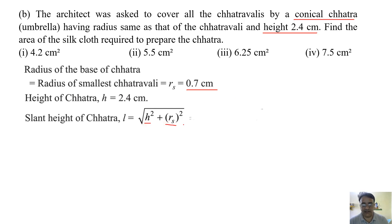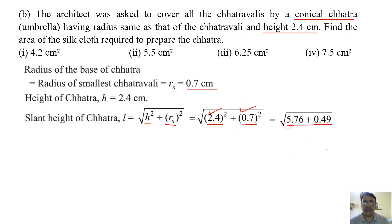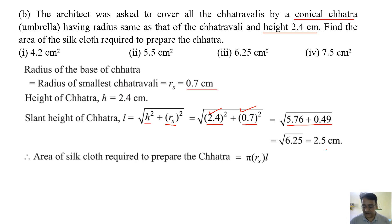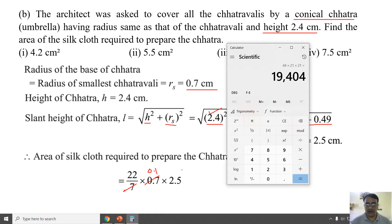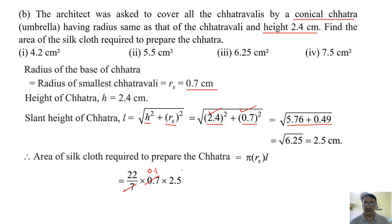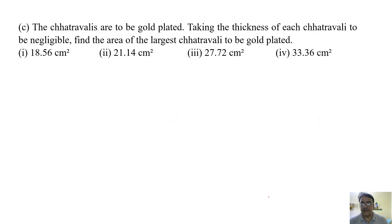Substituting: (2.4)² + (0.7)² = 5.76 + 0.49 = 6.25. The square root of 6.25 is 2.5, so l = 2.5 centimeters. Now, area of silk cloth = π r l = 22/7 × 0.7 × 2.5. Cancelling 7, we get 22 × 0.1 × 2.5 = 5.5 centimeter square. The correct option is the second one.